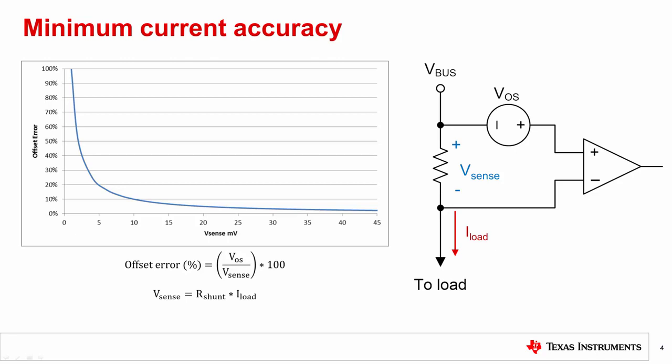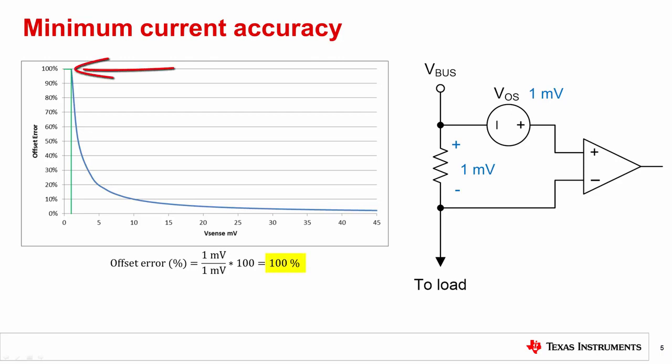Let's look at this in some more detail using a theoretical Current Sense amplifier with V_OS equal to 1 millivolt. When V_sense is equal to V_OS at 1 millivolt, the uncertainty of measurement is 100%, as shown in the plot and the offset error calculation. When V_sense is increased to 10 millivolts, the measurement error drops significantly to 10%.